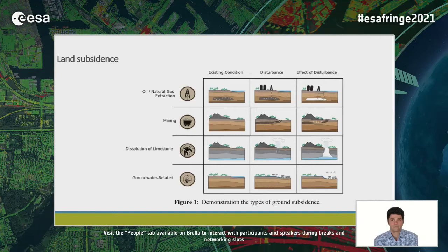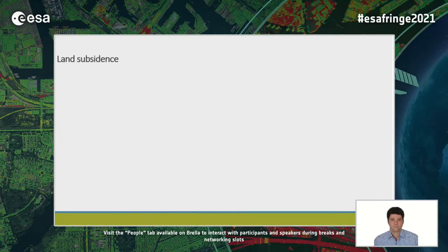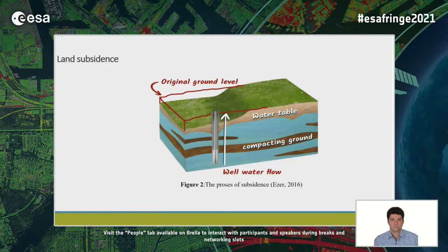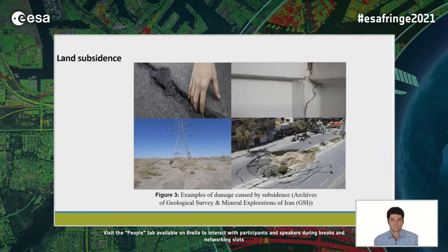Land subsidence occurs for a variety of reasons. In terms of groundwater extraction, when water is removed, the water pressure is consequently reduced. Without the water to hold up the weight of soil above it, the aquifer layer becomes more compact. As a result, land deformation happens. Overextraction of groundwater for agriculture and industrial activities is a main reason of land subsidence in the Tehran plain, and land movement can lead to significant economic losses. Therefore, continuous monitoring should be considered.